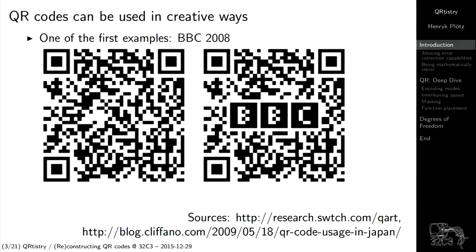Apart from the standard use, people have been using QR codes in a variety of creative ways. Most of you might be familiar with this right one — it's one of the first examples of a QR code that isn't just for machine consumption but also nice to look at for a human. That was 2008 for the BBC. It turns out this isn't actually a very sophisticated mechanism — the BBC letters are just overlaid. You could have drawn a pony or a unicorn in there, and from the barcode reader's perspective that would have been the same. Those look like they belong to the code, but they don't.